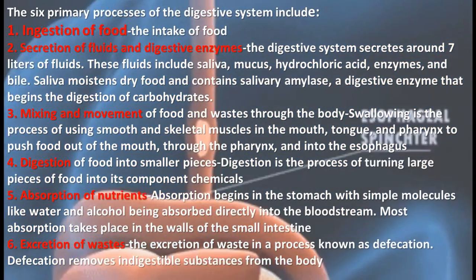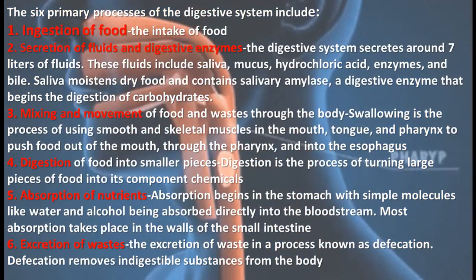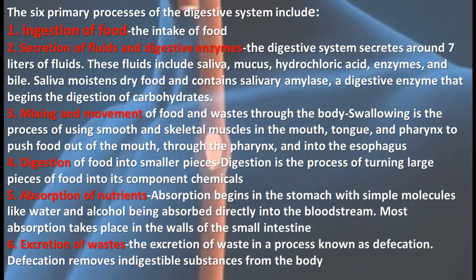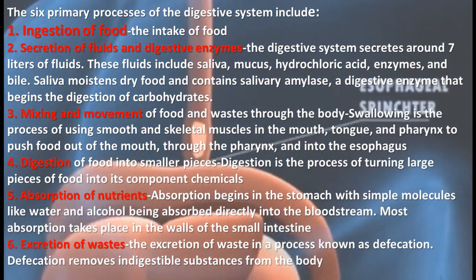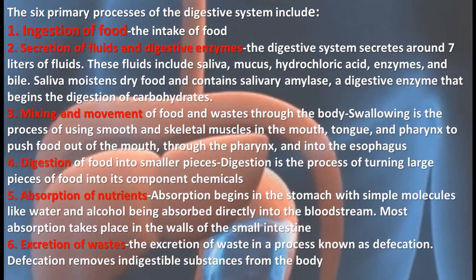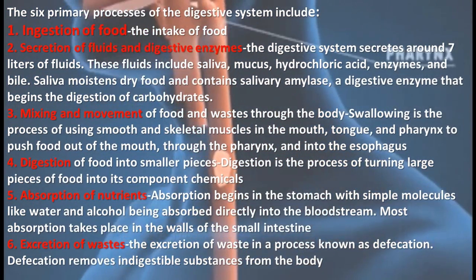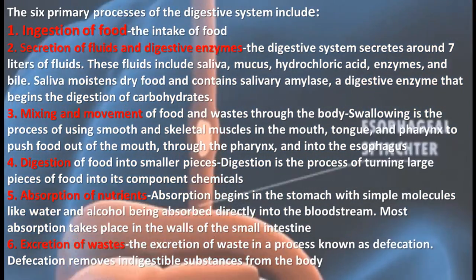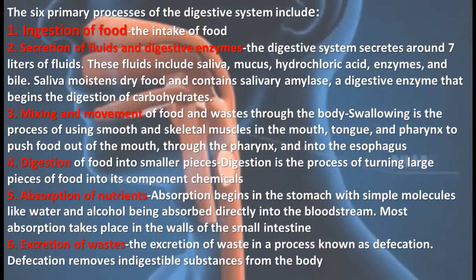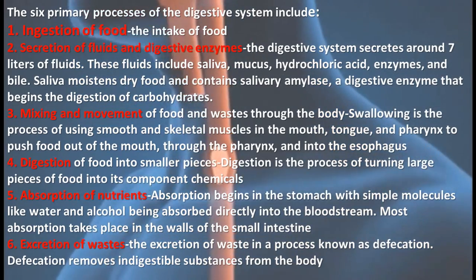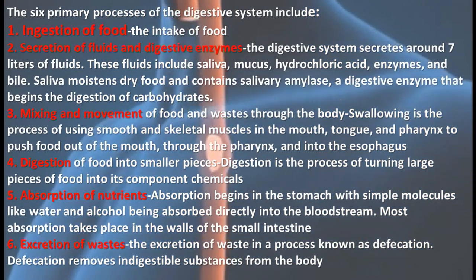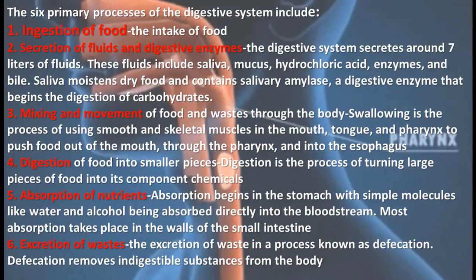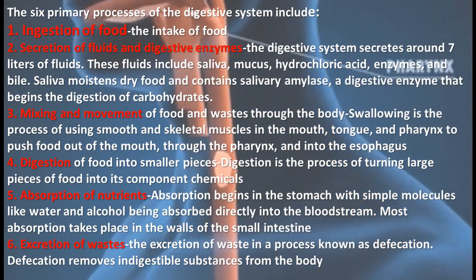There are six primary processes of the digestive system. The first is ingestion of food, which means you take in food. The second is secretion, meaning digestive glands create many types of enzyme mixtures. The third is movement, meaning the chewed food undergoes physical movement.